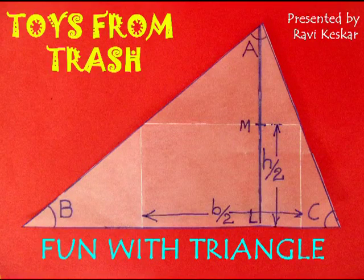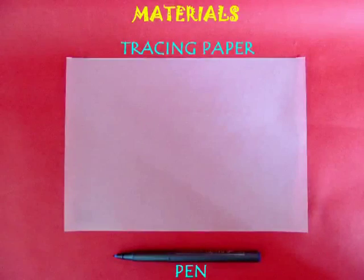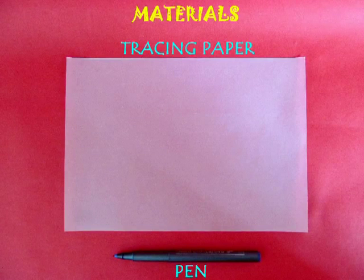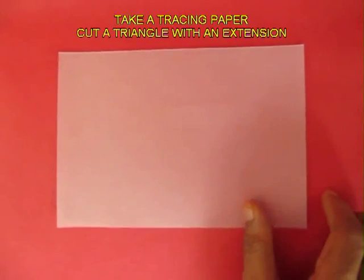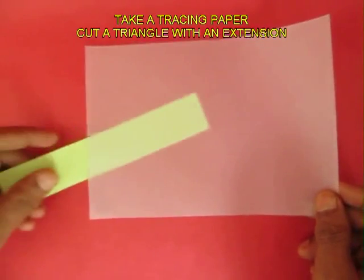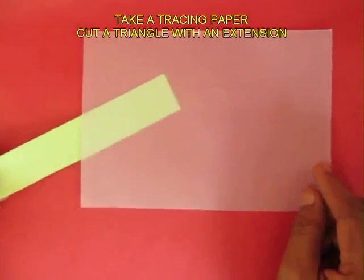For understanding the properties of a triangle you need a tracing paper and a pen. Now this is a tracing paper and if you bring another sheet below it is translucent.